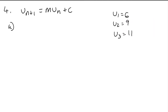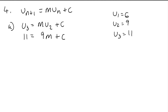This is a recurrence relation for question 4. We're told the first three terms are 6, 9, 11. Let's make up equations: u3 equals m times u2 plus c, so 11 equals 9m plus c. And u2 equals m times u1 plus c, so 9 equals 6m plus c.